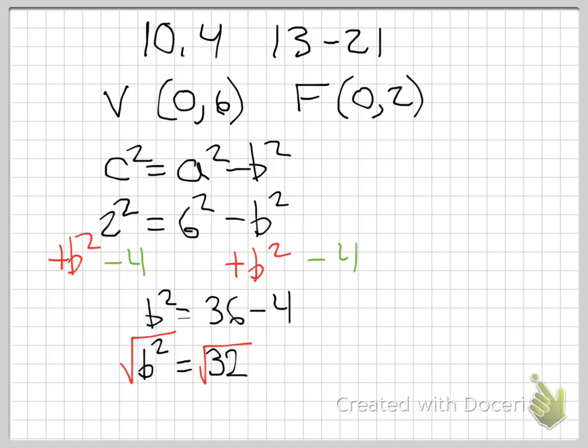We've got to simplify the square root of 32. Is that 16 times 2? So 4 root 2 is B.